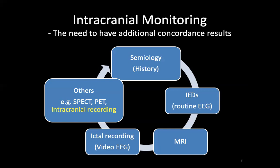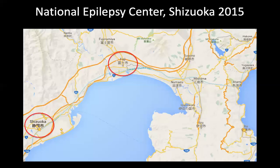Conventionally we use semiology, routine EEG, and MRI. Some centers use scalp EEG monitoring to achieve concordance in making decisions to operate. If semiology, routine EEG, and MRI are concordant, some patients will go straight to surgery, but some will still do video EEG monitoring. In some countries, PET scan and SPECT are added for further information. If all of this fails to tell us the concordant area, we will need intracranial recordings.